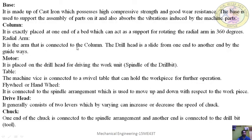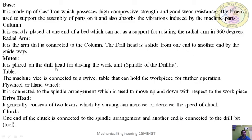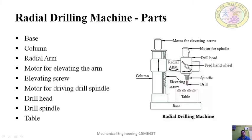The radial arm is connected to the column. The drill head slides from one end to another along the guideway on the radial arm, so the drill head can be moved in a linear or longitudinal direction to accommodate the length of the workpiece. The motor is placed on the drill head for rotating the spindle. Inside the drill head there are various gear mechanisms to change the speed of the spindle.